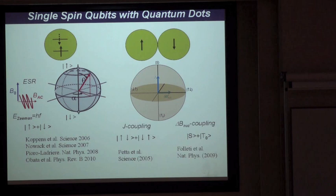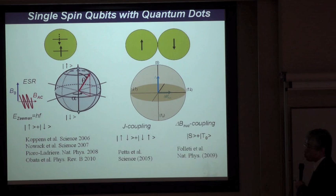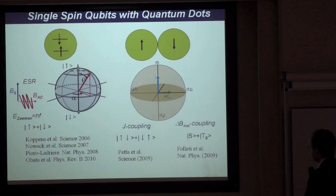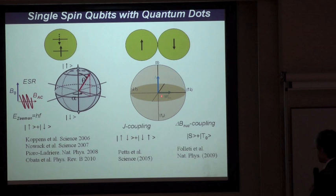Another approach is to use two spins in two quantum dots. By manipulating the exchange coupling between the two spins, the superposition of the up-down and down-up states gives a basis for a spin qubit. This was implemented by the Harvard group.